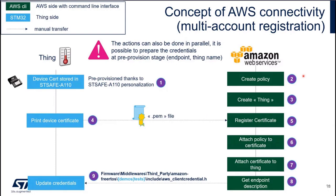You get your endpoint description. In our solution — and this is the same for Amazon FreeRTOS and all silicon vendors — you need to update a header file, aws-client-credential.h, and this gives the endpoint to the STM32. You recompile your software, and now you are ready to connect to Amazon Web Services with the multi-account registration feature.